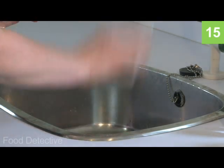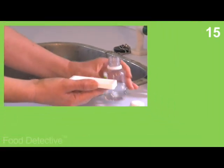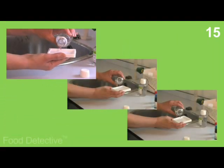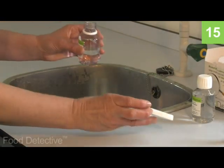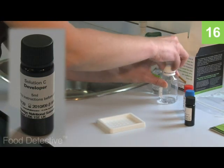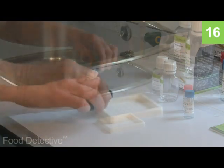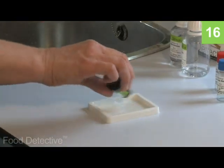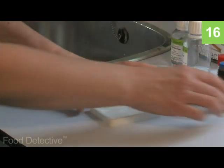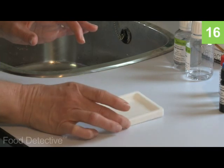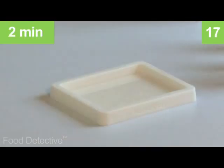After 10 minutes empty the tray into the sink and then wash the tray three times with solution D. Add solution C, the developer solution, to the reaction tray. Ensure that all the circles of the tray are covered. If air bubbles are present in any of the circles tap the tray until they dislodge. Leave for exactly two minutes.